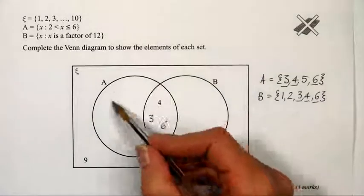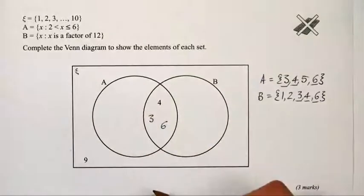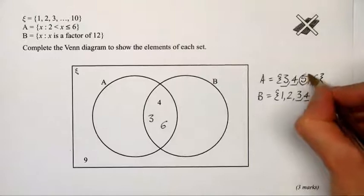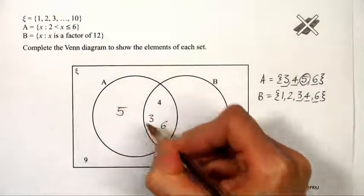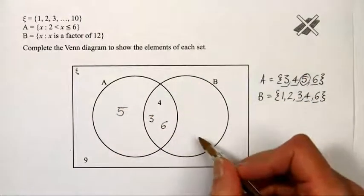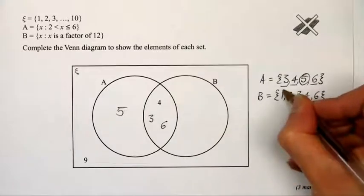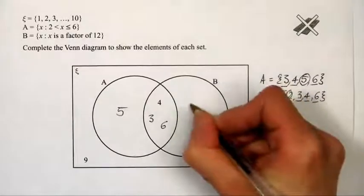Then in this bit of the Venn diagram, it's numbers that are just in set A, so that's 5. This bit here is numbers that are just in set B, so that's 1 and 2.